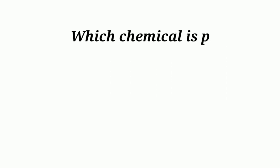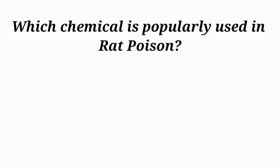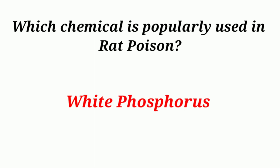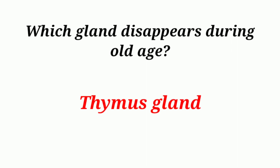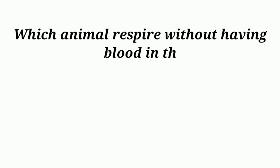Which chemical is popularly used in rat poison? White phosphorus. Which gland disappears during old age? Thymus gland. Which animal respires without having blood? Hydra.